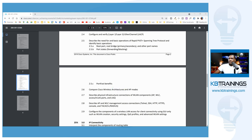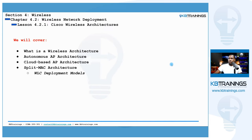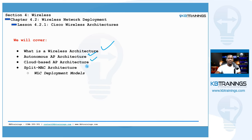To start, we need to define what a wireless architecture is. First we're going to see what a wireless architecture is, and then I'll tell you the three main wireless architectures that Cisco is promoting: the autonomous AP architecture, the cloud-based AP architecture, and the split-MAC architecture.